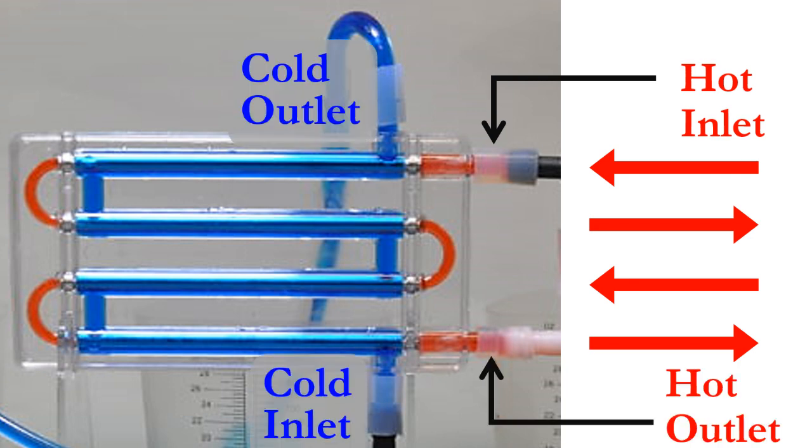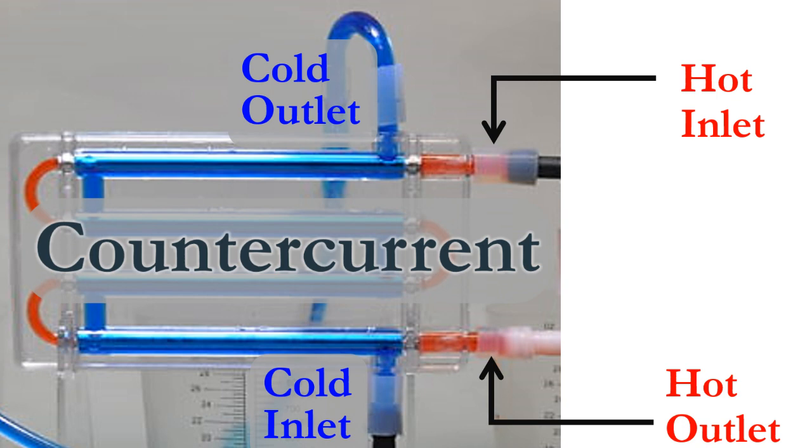Remember that the cold comes in at the bottom and exits out the top. This type of flow is classified as counter-current flow because the hot and cold fluids are moving in opposite directions through the heat exchanger.